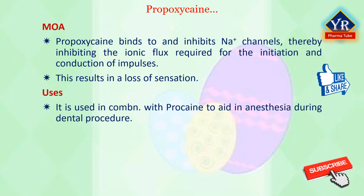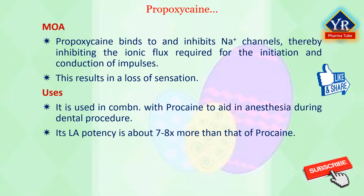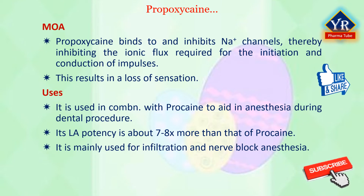Propoxicaine is used in combination with procaine to aid in anesthesia during dental procedures. It was the only dental local anesthetic available in cartridge form with procaine. Its local anesthetic potency is about 7-8 times more than that of procaine. It is mainly used for infiltration and nerve block anesthesia.